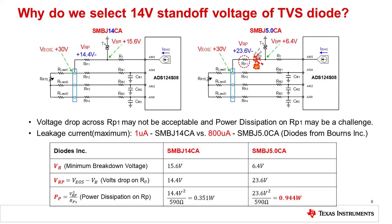The reverse leakage current on the TVS diode is the most significant source of error for this circuit. This leakage is defined at the standoff voltage, which is near the diode reverse breakdown. In this application, we use a TVS with a standoff of 14 volts, but normally apply less than 5 volts across the device. Thus, the actual leakage under normal operating circumstances will be much less than the specified leakage at the standoff voltage. Unfortunately, TVS diode manufacturers only specify the leakage at the standoff voltage, but you can infer that leakage is much less when the TVS operates well below the standoff voltage.